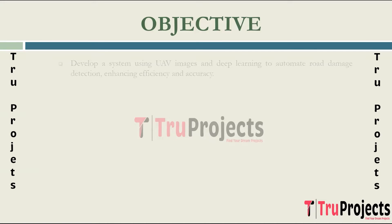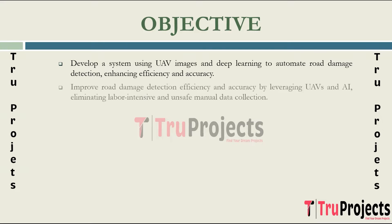The objective of the project is to develop an automated system for detecting road damage using unmanned aerial vehicle images and advanced deep learning techniques. The project aims to significantly improve the efficiency and accuracy of road damage detection by leveraging UAVs and artificial intelligence technologies, mitigating the labor-intensive and unsafe aspects of manual data collection.